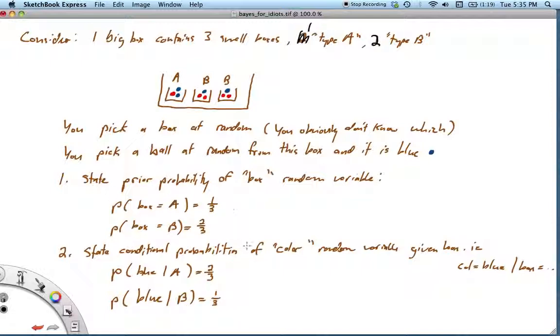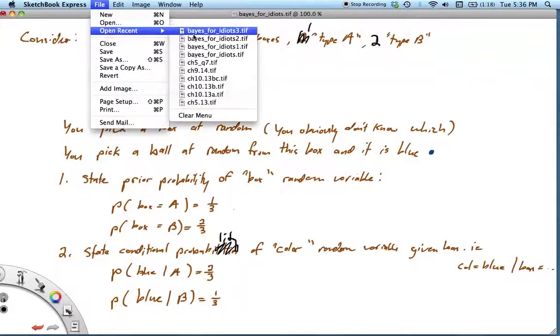Next, we want to state the conditional probability of the color random variable given box. What is the probability that the color equals blue given a particular box? Fairly obviously, the probability of blue given box A would be two-thirds. The probability of drawing blue given box B would be one-third. Try to pick up the pace here a little bit. Bayes for Idiots, part two.